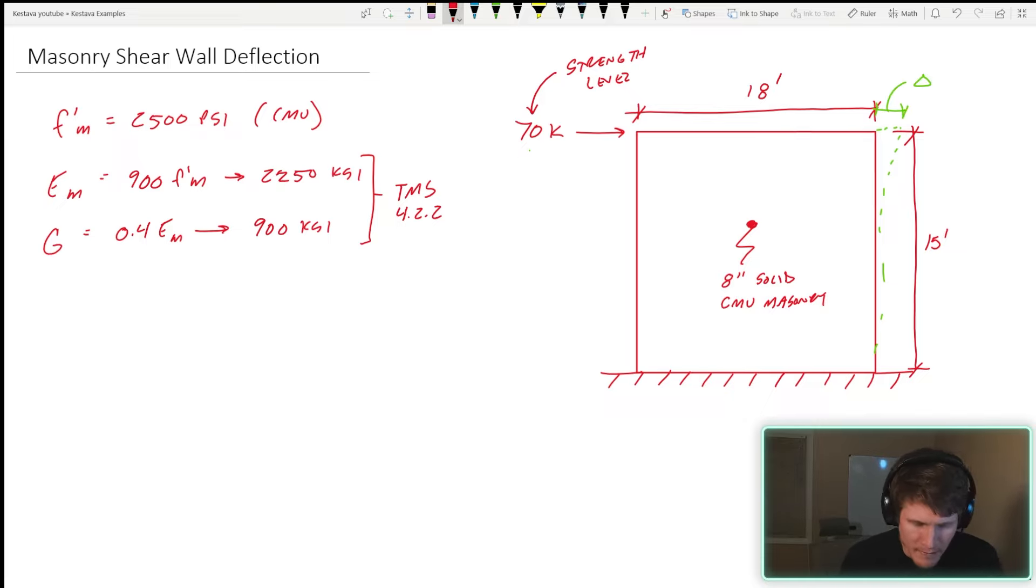Our block f prime m, our compressive strength, is 2500 psi. We are denoting this as CMU. A quick tangent here: CMU is concrete masonry units. There is a difference in masonry and properties which we design with in the TMS between concrete masonry units CMU and brick masonry units. They have different strengths and properties, and thus you have to design differently with both of them. Earlier in my career I thought all masonry construction was just called CMU. CMU is a particular type of masonry.